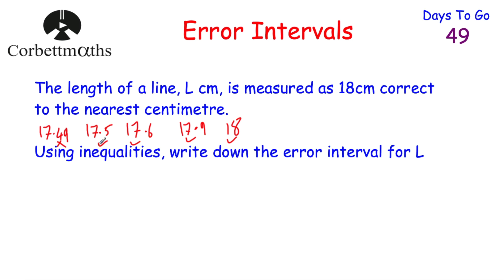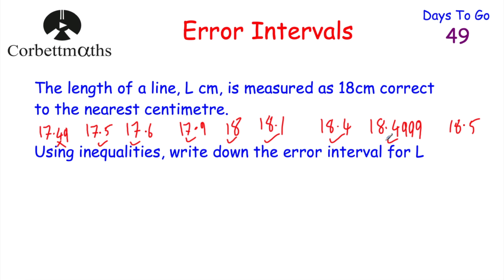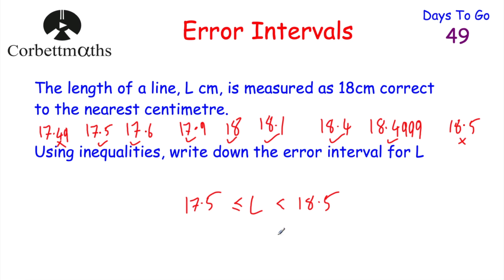So the length of the line has to be greater than or equal to 17.5 centimetres. In terms of above 18 centimetres, the line could be 18.1, 18.4, or even 18.4999 centimetres, but it couldn't be 18.5 because that would round up to 19 centimetres. So the error interval for L is: 17.5 ≤ L < 18.5 centimetres — anything up to but not including 18.5.